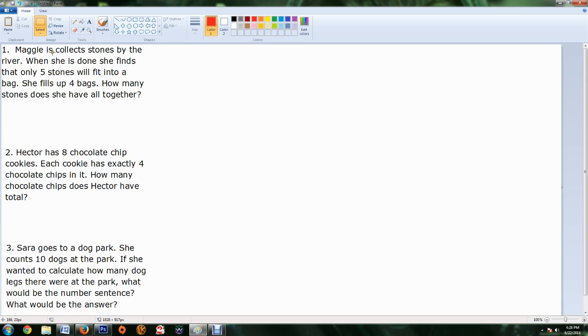So first we're going to look at number one. Maggie is collecting stones by the river. When she is done, she finds that only five stones will fit into a bag. She fills up four bags. How many stones does she have all together? So all together, first of all, is going to be one of our key words here. That tells us we are either going to add or multiply because we know that multiplication is just repeated addition. So she fills up four bags. I'm going to just circle that because that's important information. So I'm going to draw my bags here.